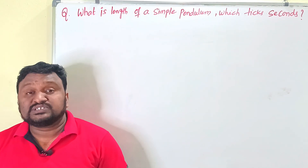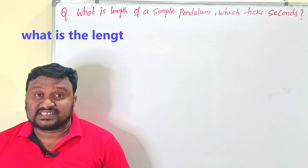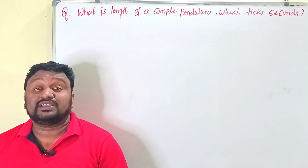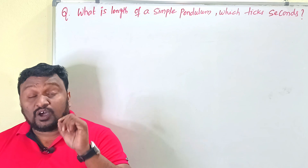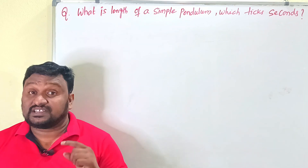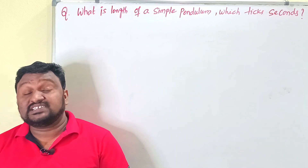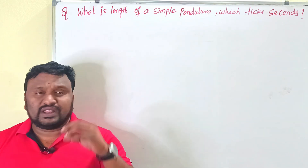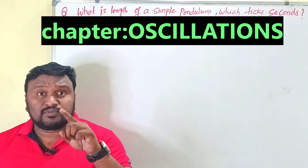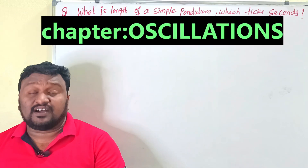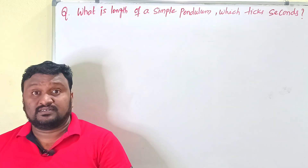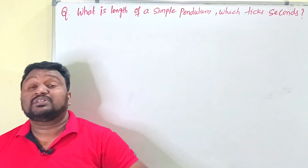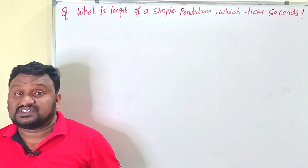Hi dear friends, in this video we are going to discuss one of the finest and important problems that should be asked along with the eight-mark questions in the chapter of oscillations — that is intermediate first-year physics. This is a very important problem. If you want to gain 60 out of 60, or if you want to pass, focus on the problems which come along with the eight-mark questions.